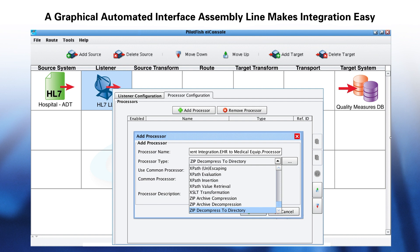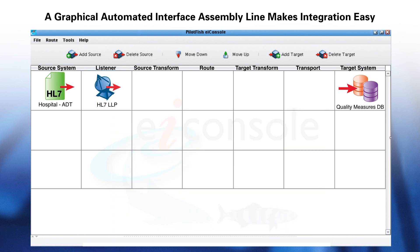Processors can be layered in any order, and you can easily add your own. The next stage is the source transform. Here the data needs to be converted into a common representation so that when it reaches the next stage — the routing stage — all of the data is in the same format.